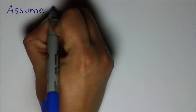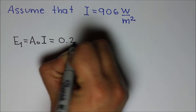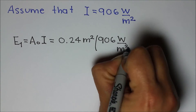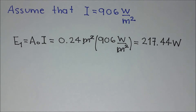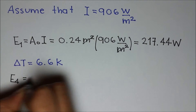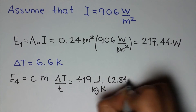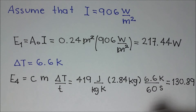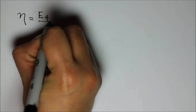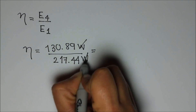Assuming a radiation intensity of 906 W per m², the energy received by the reflector will be 0.24 m² times 906 W per m², which equals 217.44 W. Assuming a difference of temperature of 6.6 K, E4, the sensible heat gain, will be equal to 419 J per kg·K times 2.84 kg times 6.6 K over 60 seconds, which equals 130.89 W. The efficiency is given by E4 over E1, which in this case is approximately 60%.